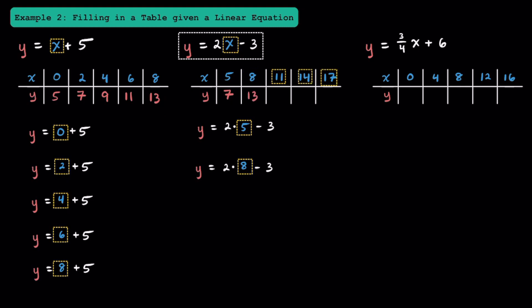Now see if you can figure out the next three y values when x is equal to 11, 14, and 17. Subbing in 11 for x, we get 2 times 11 minus 3. 2 times 11 is 22, and 22 minus 3 is 19. Subbing in 14, we have 2 times 14 minus 3. 2 times 14 is 28, and 28 minus 3 is 25. And subbing in 17, we have 2 times 17 minus 3. 2 times 17 is 34, and 34 minus 3 equals 31.